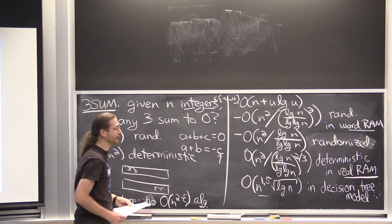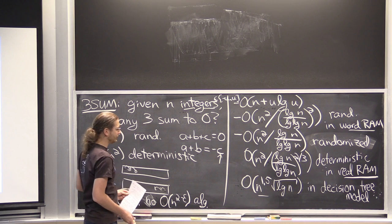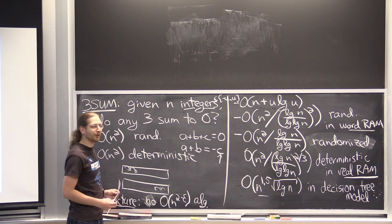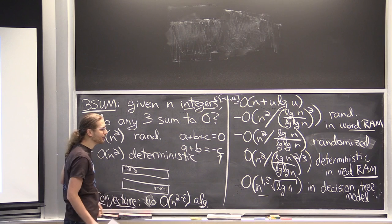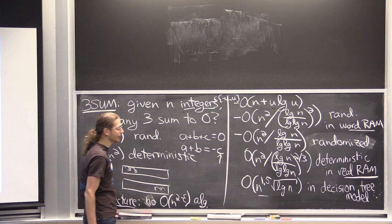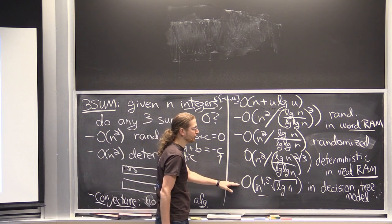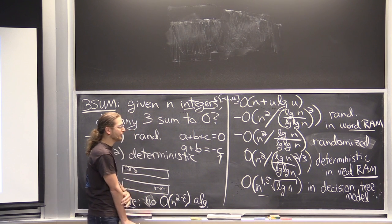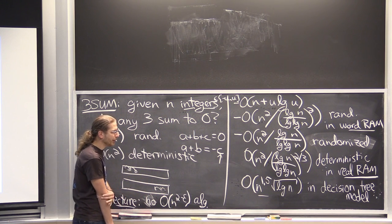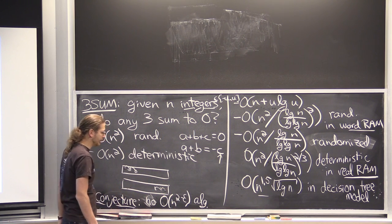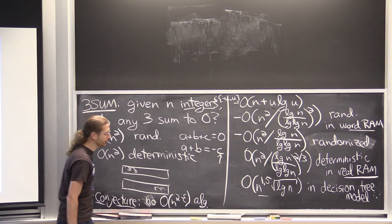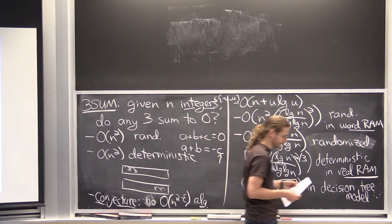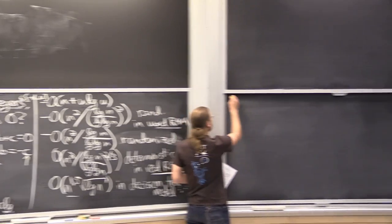That's a short story about the known upper and lower bounds on 3-SUM. There are weak lower bounds in a particular version of the decision tree model — when you can only compare sums of two items, you can get an n² lower bound — but that's not especially interesting given the n^1.5 upper bound.